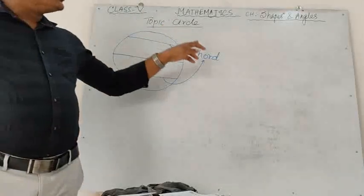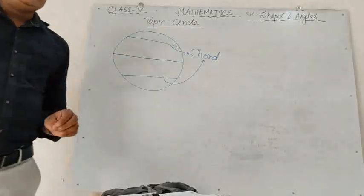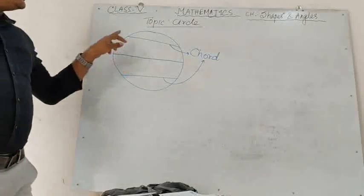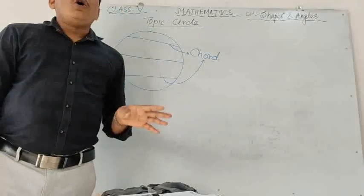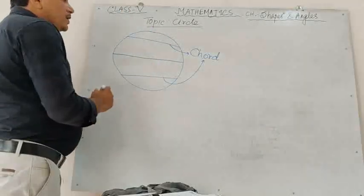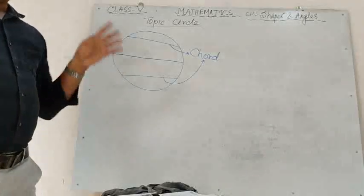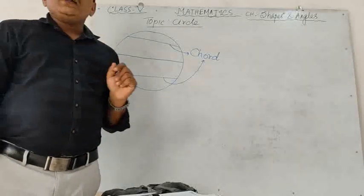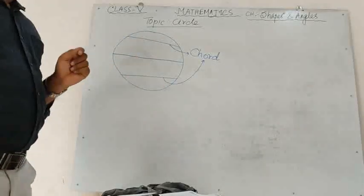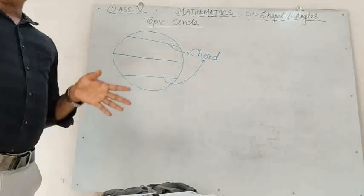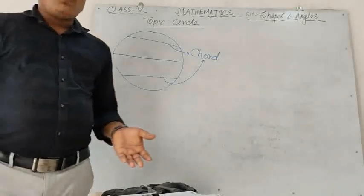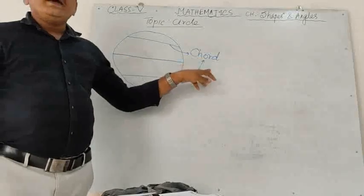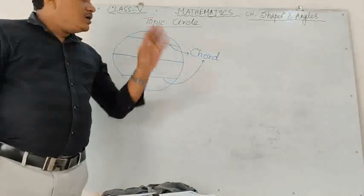Diameter is also a chord. But what is the speciality? The diameter is the longest chord of the circle — just remember this point. If the question comes: which is the longest chord of the circle? Then you have to write: diameter is the longest chord of the circle.